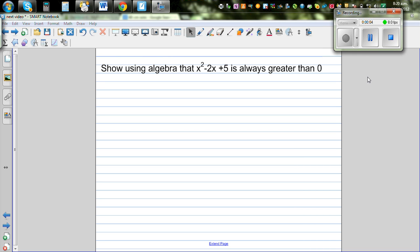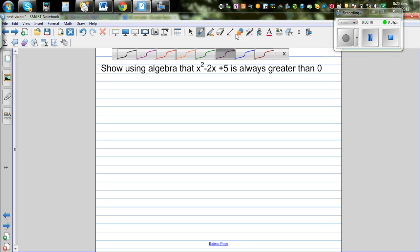Show using algebra that x squared minus 2x plus 5 is greater than 0. So we're going to use algebra. We can do it graphically. I'll first use algebra and then I'll show it graphically. So I'm going to use the method called completing the squares.